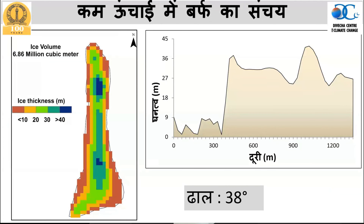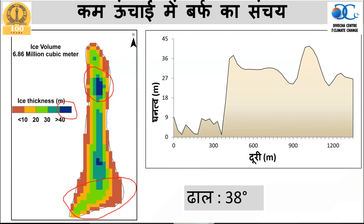The anomaly lies in the ice thickness distribution: in the higher reaches the ice thickness is very little — around 10 to 20 meters — but toward the bottom it has a very large thickness, higher than 40 meters. That is unusual and not generally expected in glaciers. Out of the 25 million cubic meter total volume, the ice volume is around 6.86 million cubic meters — perhaps 8 to 9 million maximum including other glaciers — so around 7 million cubic meters out of 25 is ice mass.